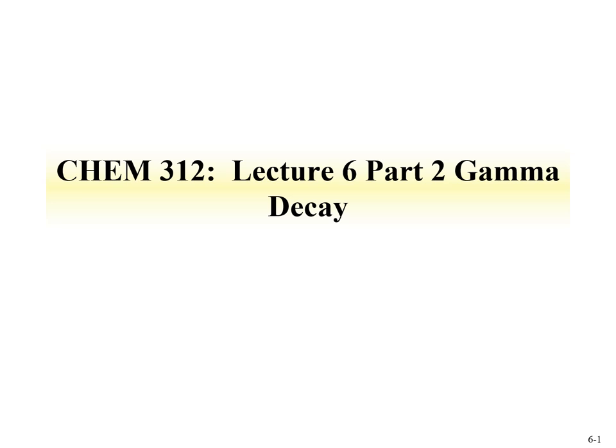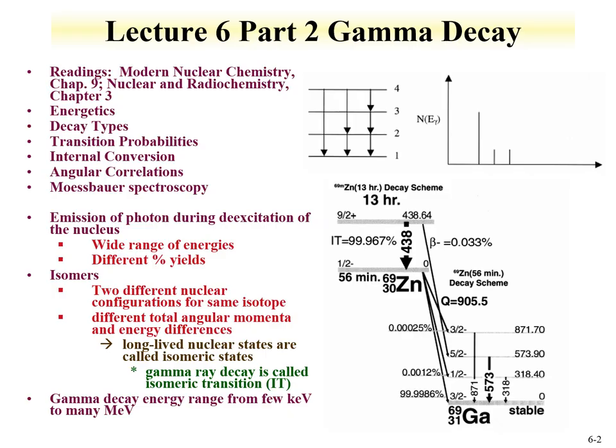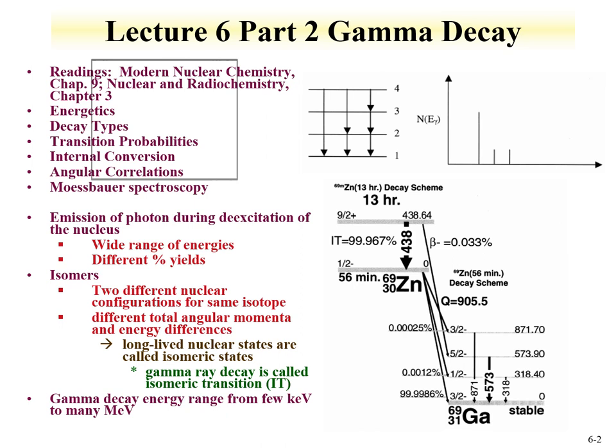Time for Lecture 6, Part 2 on Gamma Decay for Chemistry 312 Radiochemistry. We're going to get into Mössbauer spectroscopy. Lecture 1 covered the topics shown here, and for Lecture 2 we're going to cover Mössbauer spectroscopy.